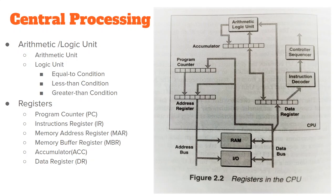Next, coming to the logic unit — logic is basically a condition we are trying to prove if it is right or wrong. It could be an equal-to condition, a less-than condition, or a greater-than condition. Equal-to checks if the left-hand side equals the right-hand side. Less-than is when the left element is smaller, and greater-than is when the left side is greater.